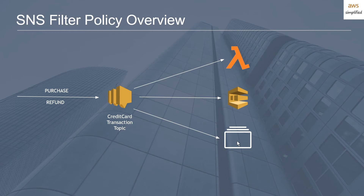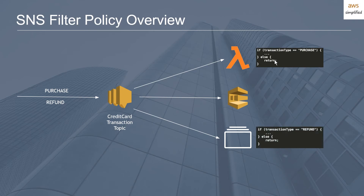The other approach is to still have only one topic and add handlers inside your Lambda function — say, if transaction type is purchase, then do something, else just return. And similarly, if a subscriber only cares about refunds, you do the same thing: if transaction type equals refund, then do something, else return. Since the middle subscriber cares about both, it doesn't need this if logic and just handles all messages evenly.